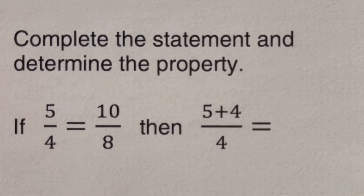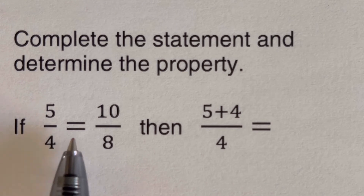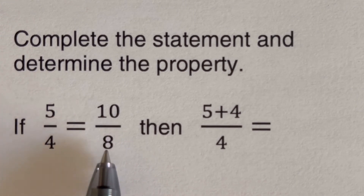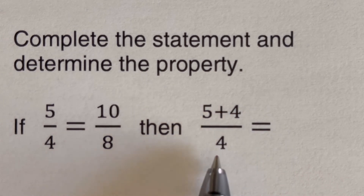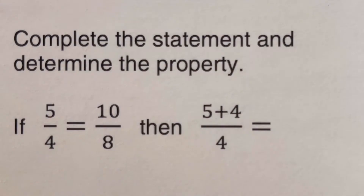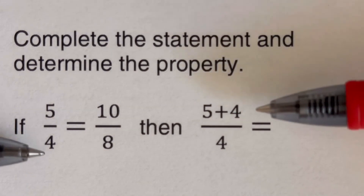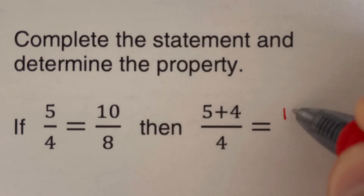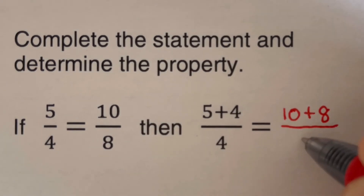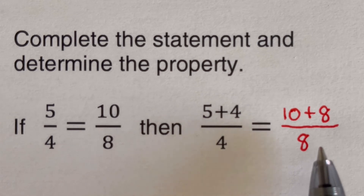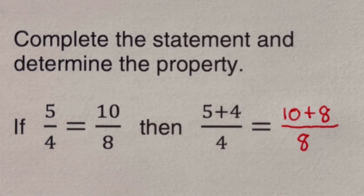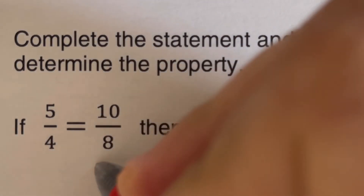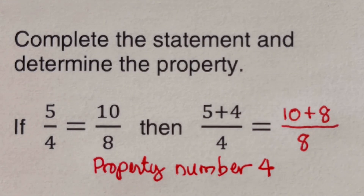In this example, we are given five over four equal to 10 over eight, then five plus four over four equals blank. Notice that on the left side, four was added to the numerator. So we do the same on the right — add eight to the numerator of 10 — giving us 10 plus eight over eight. This is the fourth property of proportions.